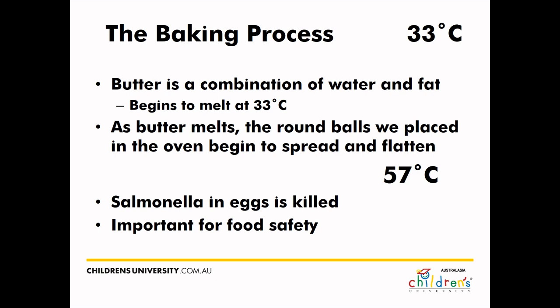Another change — one we can't actually see but we know happens — will occur at 57 degrees Celsius. At 57 degrees Celsius, salmonella can no longer survive. Salmonella is important because it's the only part of this experiment where we have to worry about food safety. Salmonella is sometimes found in eggs — not all eggs, but sometimes — and if we don't kill it and we eat it, it leads to lots of gastrointestinal issues and can even require hospitalisation. So it is very important that our mixture passes 57 degrees Celsius to kill off any salmonella.